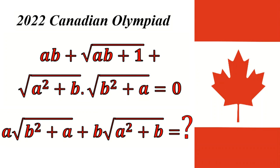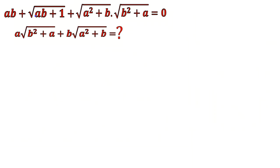The 2022 Canadian Mathematical Olympiad, problem number one. We have this equation set equal to zero. The problem says: find the root of b² + a + b · root of a² + b.